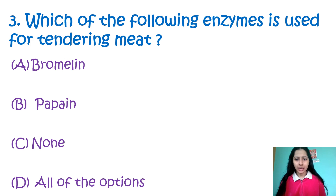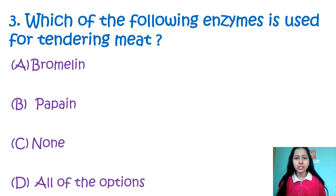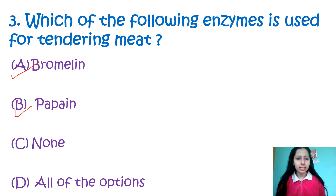Question 3: Which of the following enzymes is used for tenderizing meat? Option A: bromelain, Option B: papain, Option C: none, Option D: all of the options. Tenderization of meat means the reduction of the amount of detectable connective tissues in the meat. The right answer is both bromelain and papain — bromelain is found in pineapple and papain is found in papayas. These enzymes help in meat tenderization. So my option is option number D, that is all of the options.